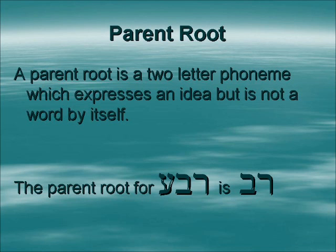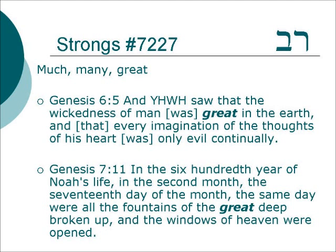A parent root is a two-letter phoneme which expresses an idea by itself, but it may not be a word by itself. However, in this case we're going to see that this parent root, Reshbet, appears by itself quite a bit. Rav means much, great, or many.